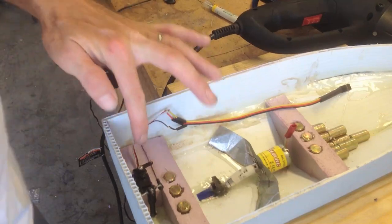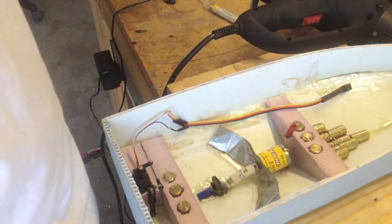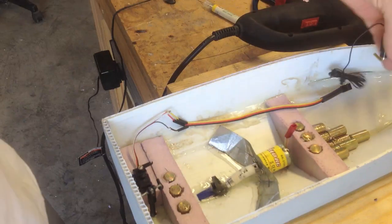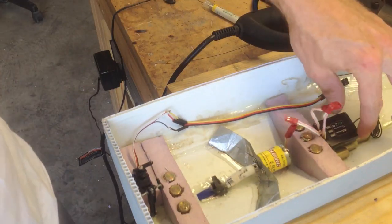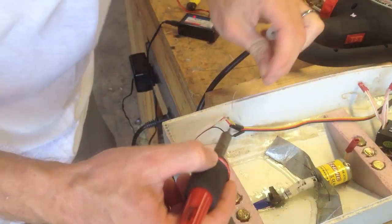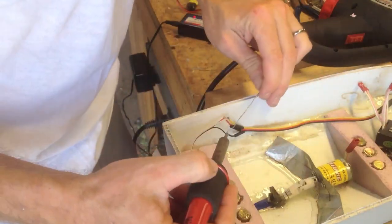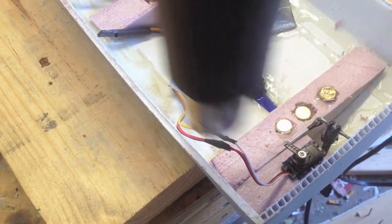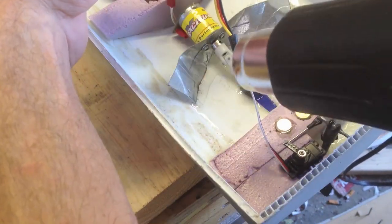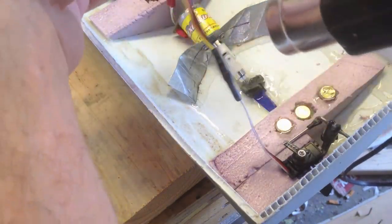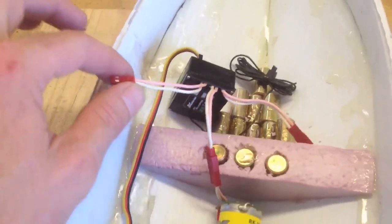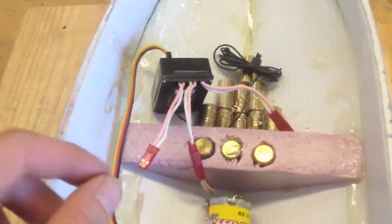I had to extend the servo cable to go all the way to the front where the receiver will be. And I'm probably right about there. There's the receiver. Receiver's in. Connected to the motor.